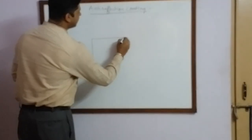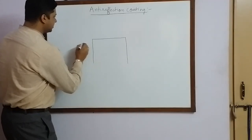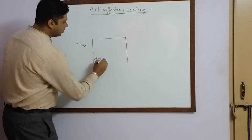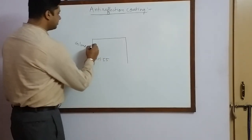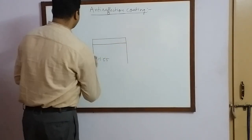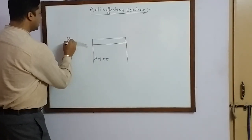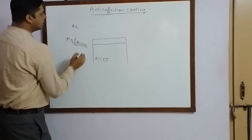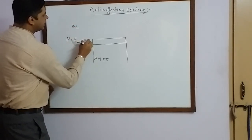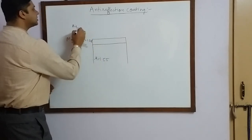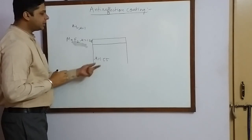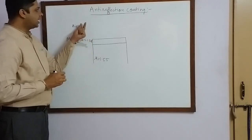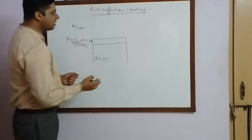Usually the lens of a camera is made up of glass. For glass, the refractive index μ is roughly about 1.55. Over the surface of this glass, a very thin layer of a material called magnesium fluoride, MgF₂, is deposited such that the refractive index of MgF₂ is about 1.38, which lies between the refractive index of air (which is 1) and glass (which is 1.55).